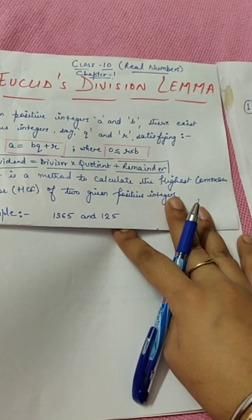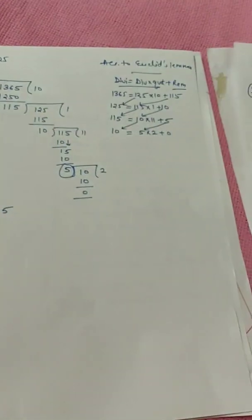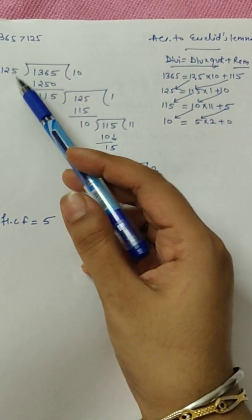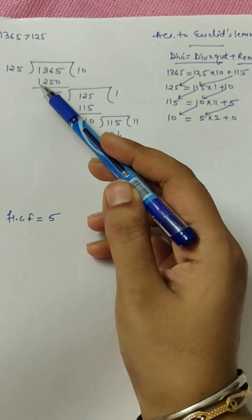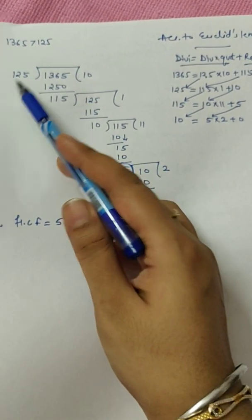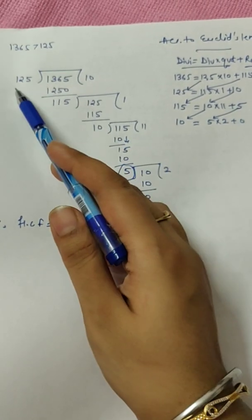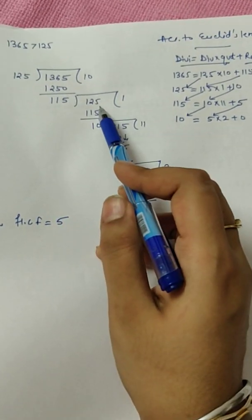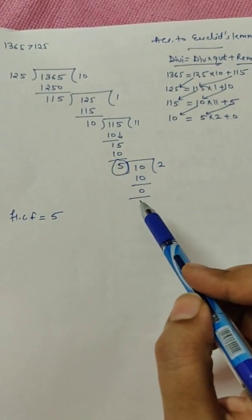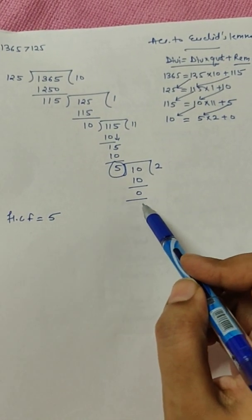Let's take two numbers 1365 and 125. So the division I have performed, it can be divided like this by long division method: 125 into 1365 gives 10, that's 1250, and minus it will be 115. And now after this division, your divisor will become your dividend, and you perform the division till the remainder comes out to be zero.